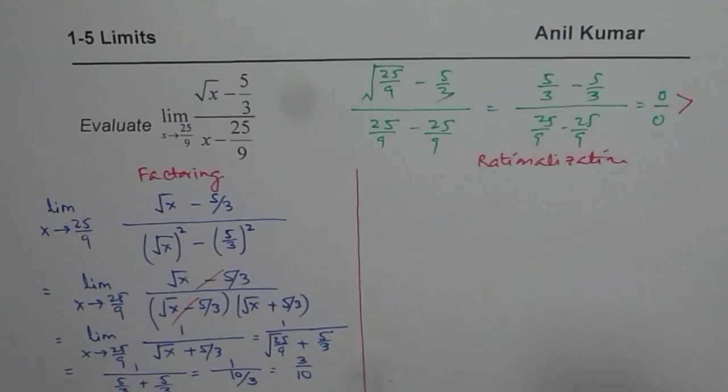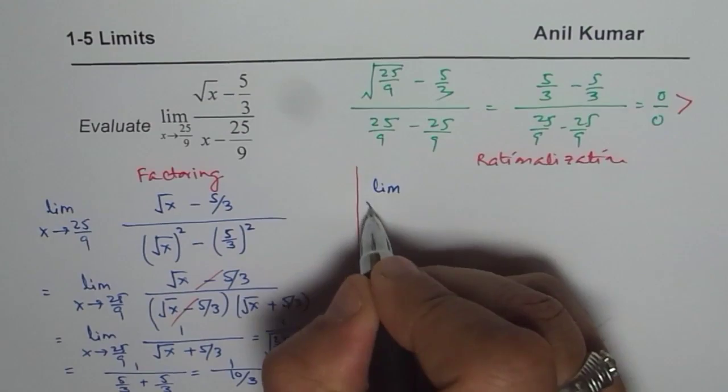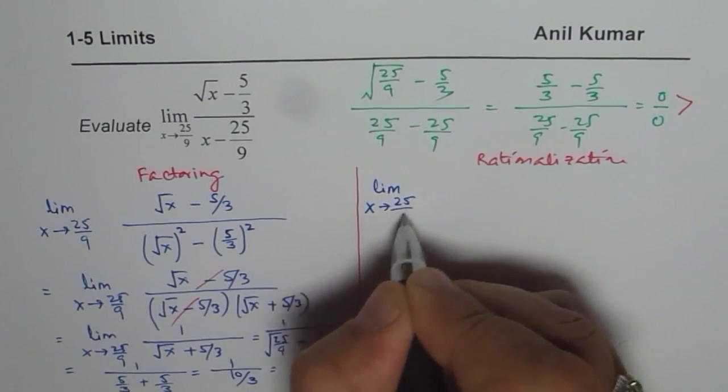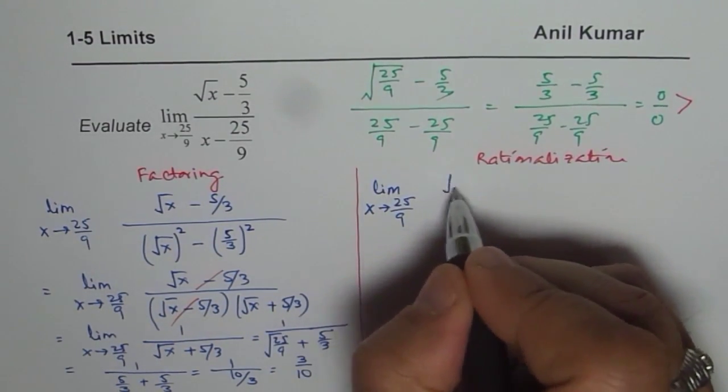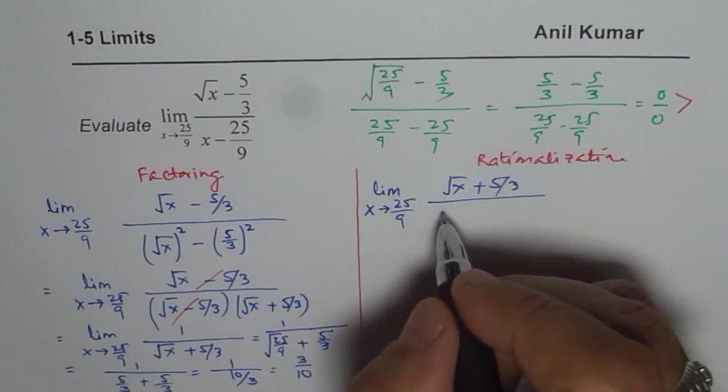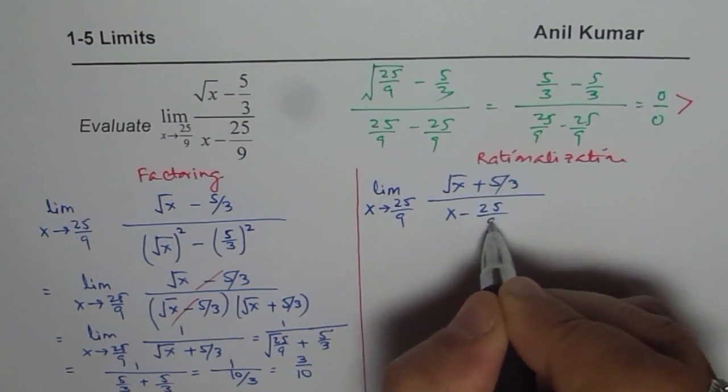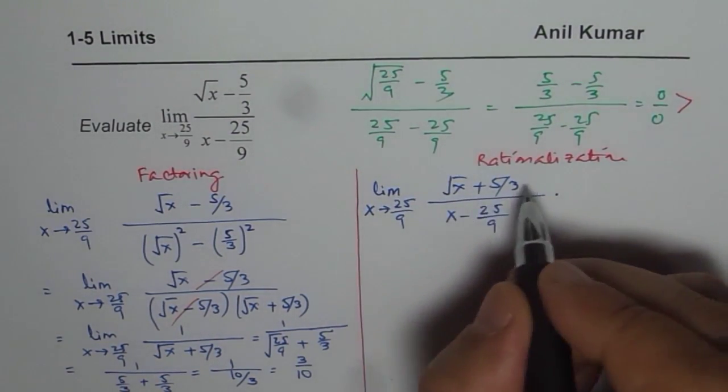Now let us do the same question using rationalization. So we have limit x approaches 25 over 9 for square root of x plus 5 over 3 and the denominator here is x minus 25 over 9. Let us rationalize the numerator,